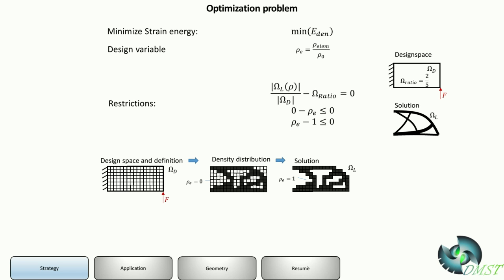How will it look like? We have a design space defined on a finite element mesh. All these elements are in omega_d, the black marked omega_d, and the density distribution is in omega_l. If you kill the white elements we get our solution, so omega_l over omega_d equals omega ratio.